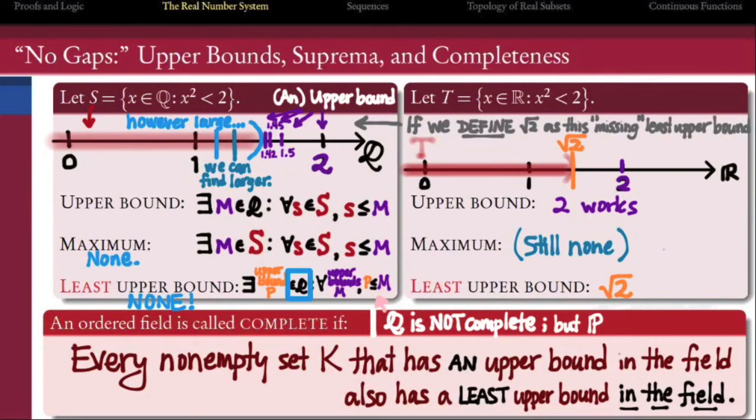And in an essential way, the real numbers are the only complete ordered field that's compatible with our usual notions of rational arithmetic.